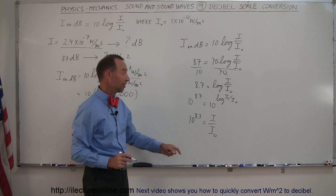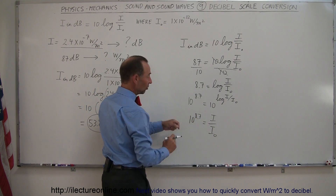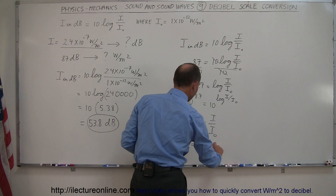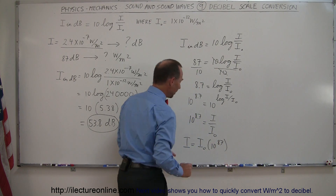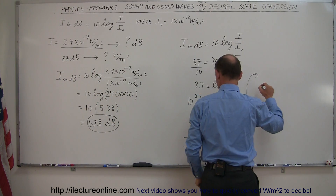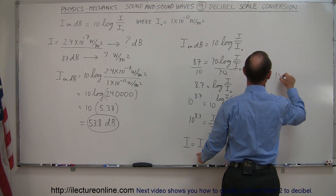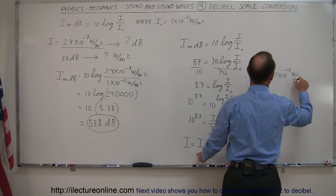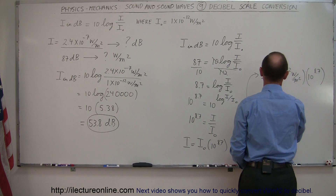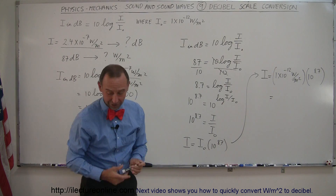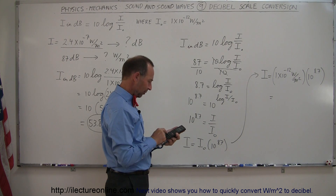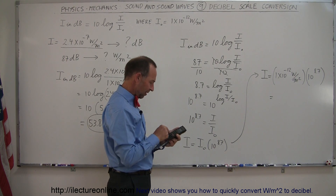Since we're solving for I, we cross-multiply and rearrange: I is equal to I-sub-nought times 10 to the 8.7 power. Realizing that I-sub-nought is the threshold of hearing, we can say I is equal to 1 times 10 to the minus 12 watts per square meter, multiplied by 10 raised to the 8.7 power. Without a calculator you'd be in trouble here, but the calculator has no problem with 10 to the 8.7.